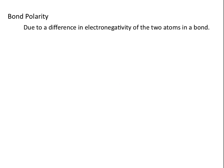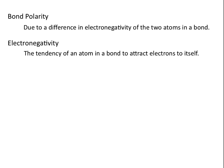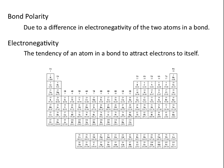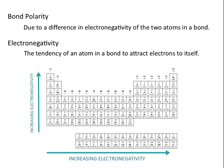Bond polarity is due to a difference in electronegativity of two atoms in a bond. Electronegativity is the tendency of an atom in a bond to attract the electrons to itself. We can gauge how electronegative an atom is using our periodic table. Electronegativity increases as you move from left to right across the periodic table, and it also increases as you move from the bottom to the top, with the main exception being the noble gases. This makes fluorine the most electronegative element on the periodic table.